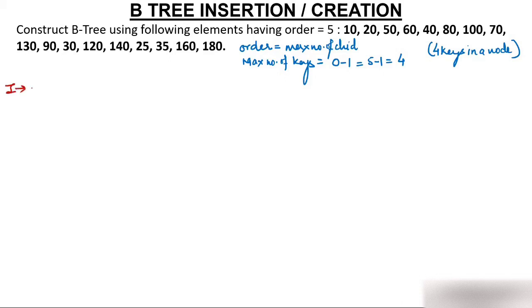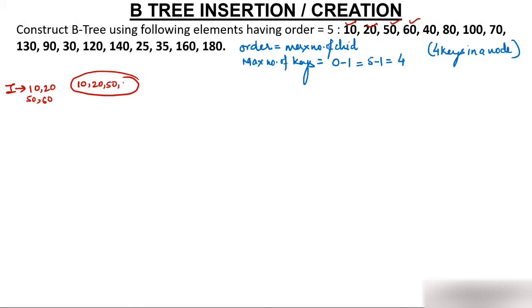Let's start the creation. Insert the first element 10 — create a node and insert 10. Next insert 20 after 10. Then insert 50 after 20. Then insert 60 after 50. Now the node contains 10, 20, 50, 60.